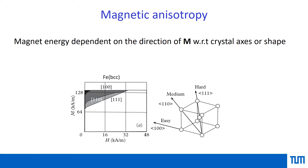When you apply a field, the material gets saturated much more easily along the easy axis compared to the hard axis. This is what we mean by magnetic anisotropy — there is some sort of anisotropy which makes one crystal axis different from the other in terms of ease to magnetize it.